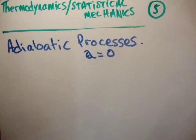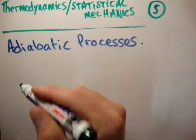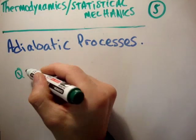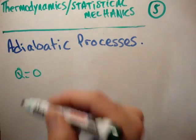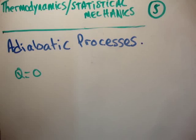Now let's define an adiabatic process. An adiabatic process is simply when Q — the heat input or output — is equal to zero. That's it. There's no need to be afraid of the word; it just means Q equals zero.